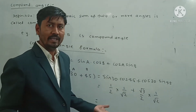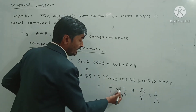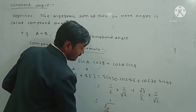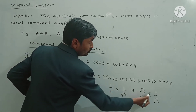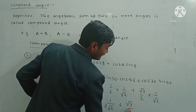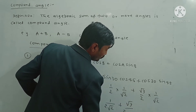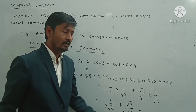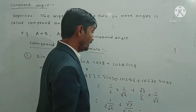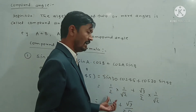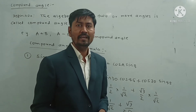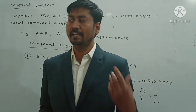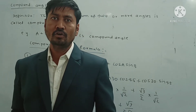Now we simplify: 1 times 1 is 1, divided by 2 times root 2, plus root 3 times 1 divided by 2 times root 2. We make the denominators the same and then we can directly add the numerators. In this way we can use the compound angle formula for sin(A+B).